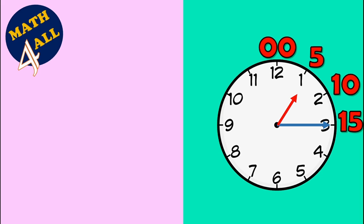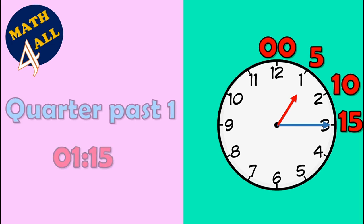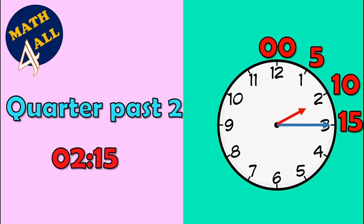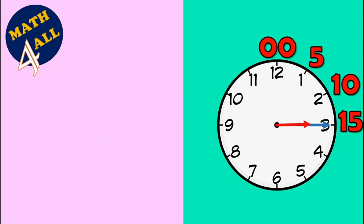What is the time? As you see, the short hand is on one, so it's one. And the long hand, or the minutes hand, is on three — it means fifteen minutes. It's one fifteen, or it's quarter past one.